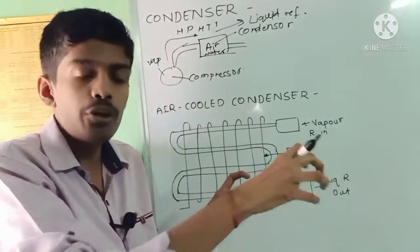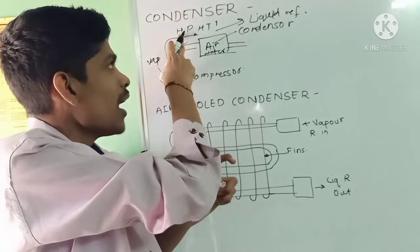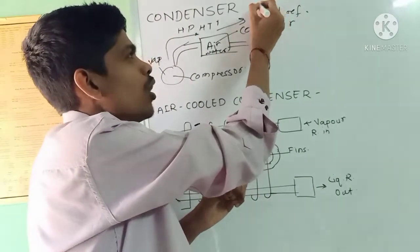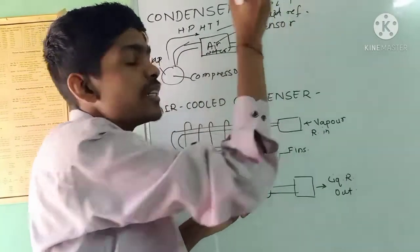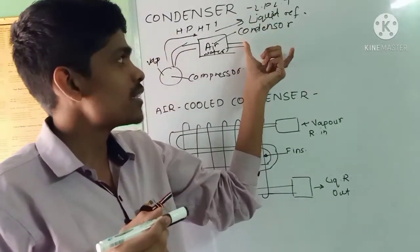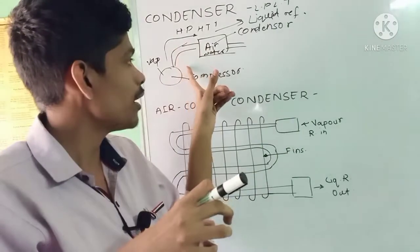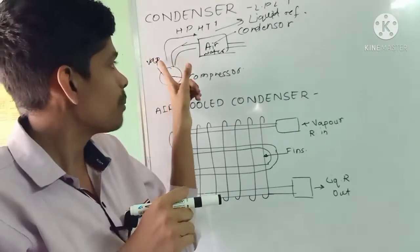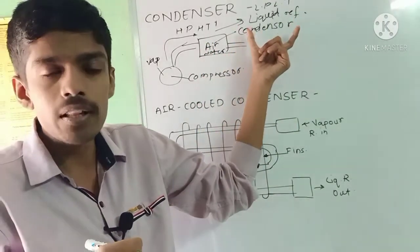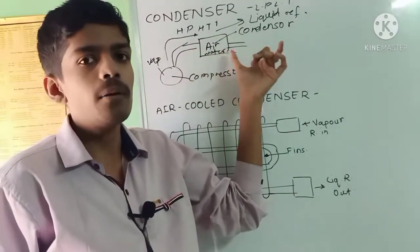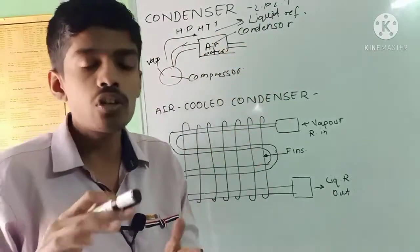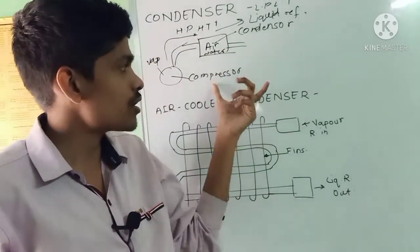The main aim of the condenser is to remove the heat from the vapor refrigerant and convert it into liquid refrigerant. Condensers are on the high pressure side of the refrigeration system — they are generally installed on the high pressure side.